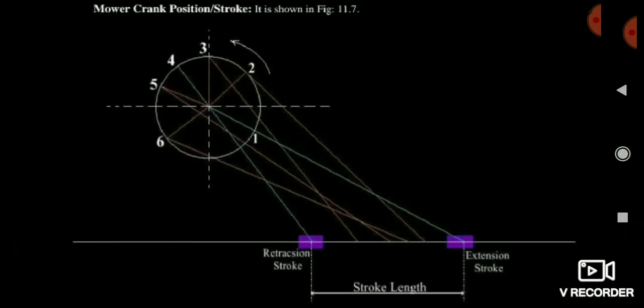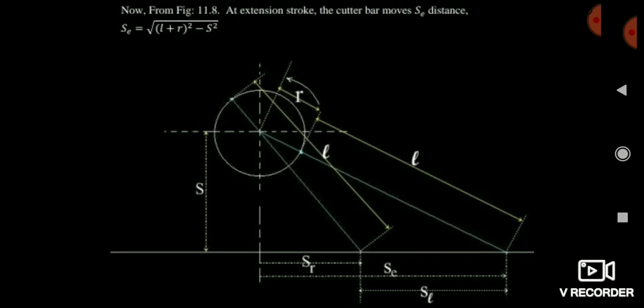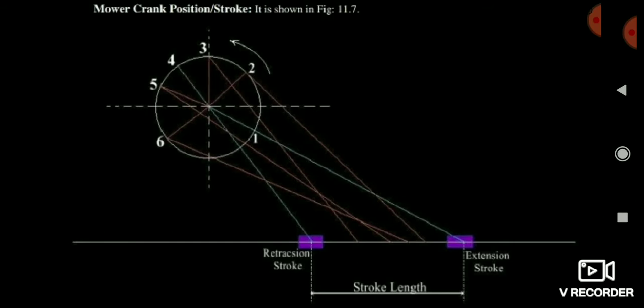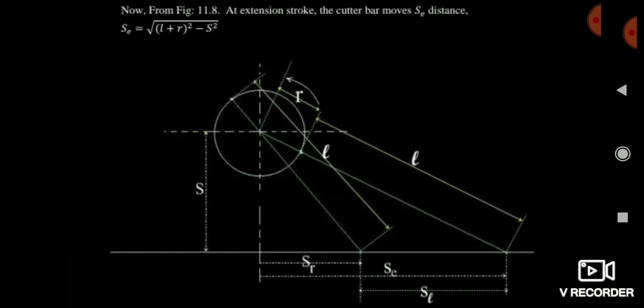The stroke length is nothing but the length between the extension stroke and the retraction stroke. Similarly, in case of a piston, the stroke length is the length between TDC and BDC. Here also the stroke length is simply the length between extension and retraction stroke.